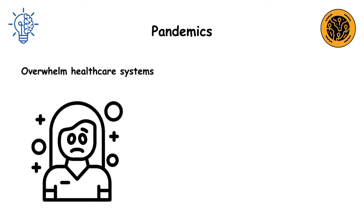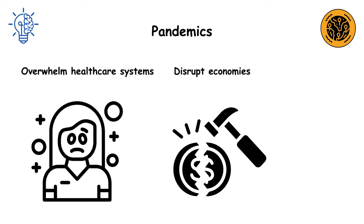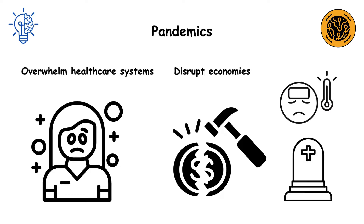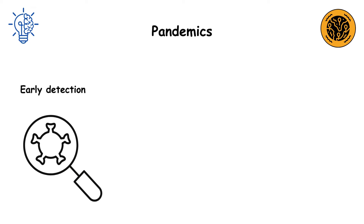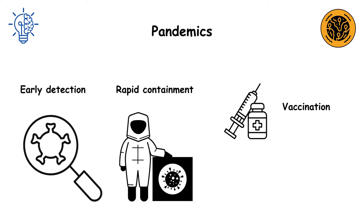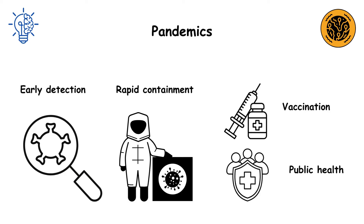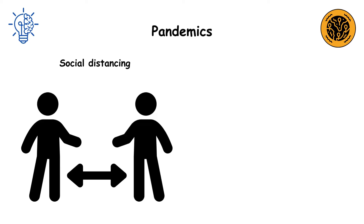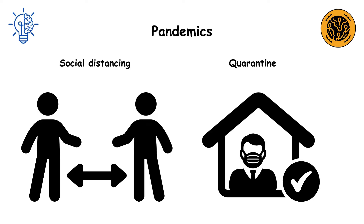Pandemics can overwhelm healthcare systems, disrupt economies, and cause widespread illness and death. Effective responses involve early detection, rapid containment, vaccination, and public health measures like social distancing and quarantine.